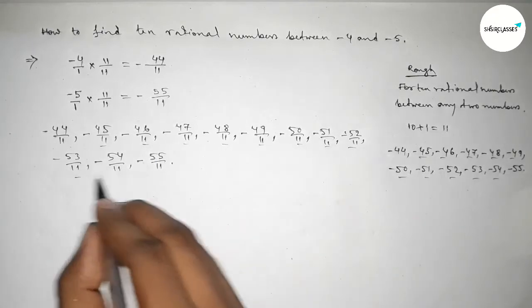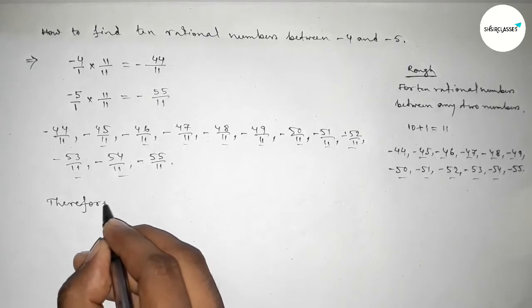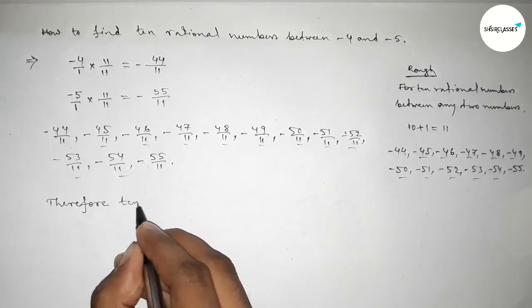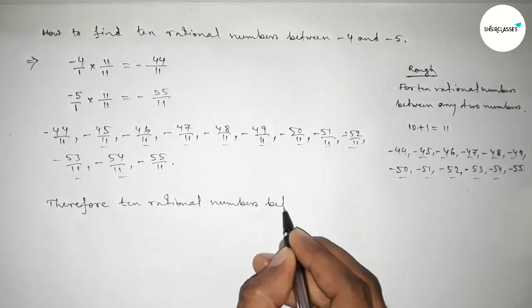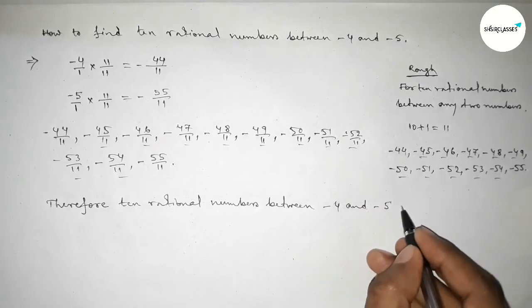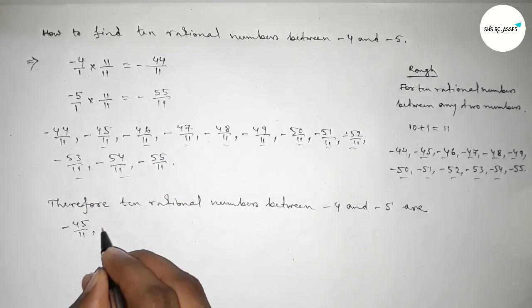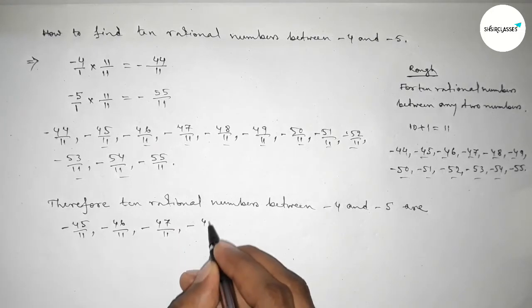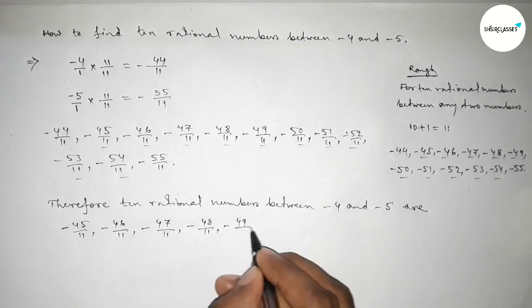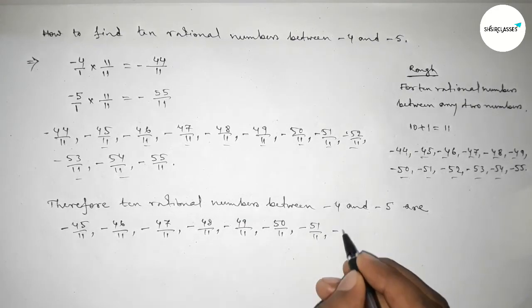And among these, these are the required 10 rational numbers between minus 4 and minus 5. They are: minus 45 over 11, minus 46 over 11, minus 47 over 11, minus 48 over 11, minus 49 over 11, minus 50 over 11, up to minus 54 over 11.